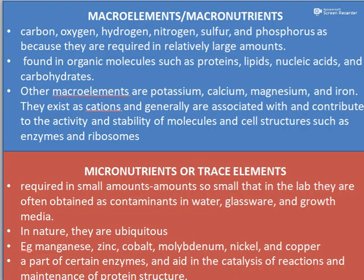The main macronutrients are the macro elements. They mainly include carbon, oxygen, hydrogen, nitrogen, sulfur, and phosphorus. They are required in large quantities and all these elements are needed for the synthesis of various biomolecules such as proteins, lipids, nucleic acids, and carbohydrates. Since these molecules are needed in large quantities, that is why they are called macronutrients.